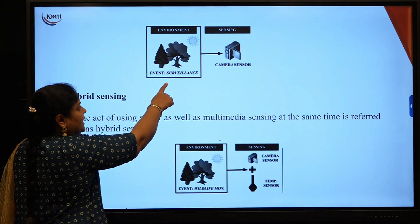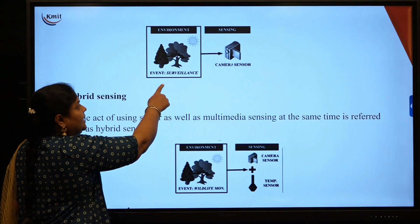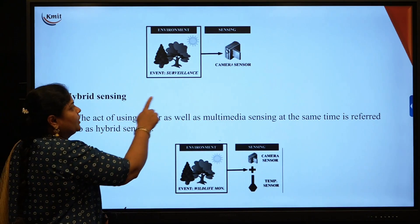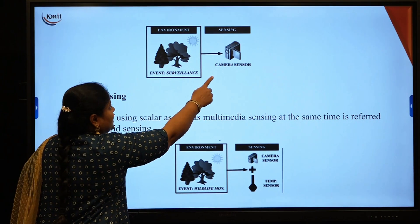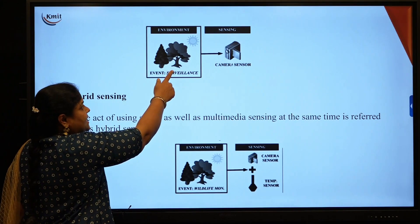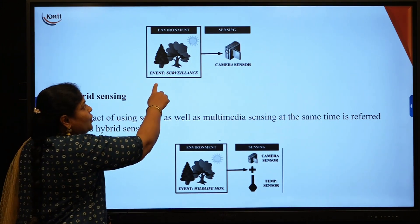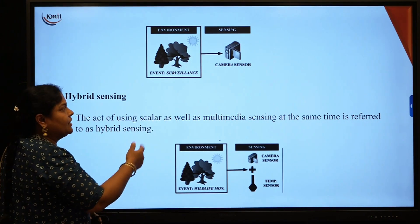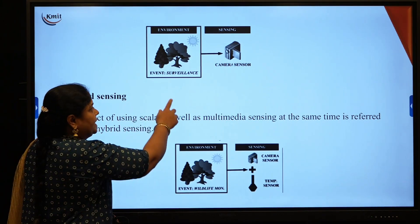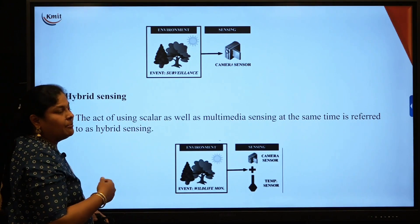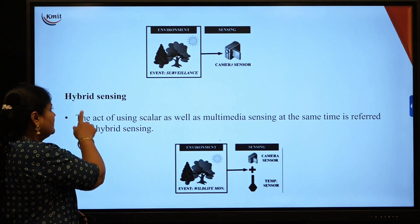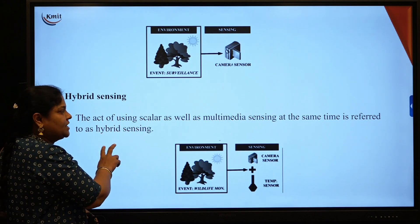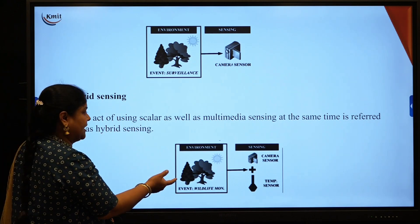Taking an example: in one environment we place a camera sensor. With this camera sensor, you can check the image size, direction of the image, and flow of the image. Instead of only scalar values, it also calculates vector values — that is the meaning of multimedia sensing.